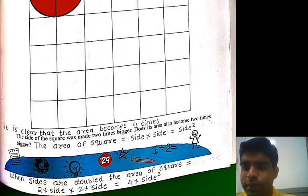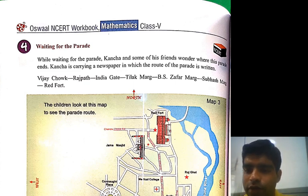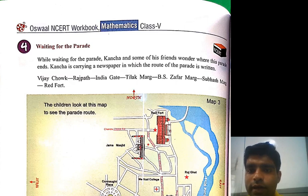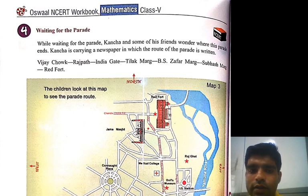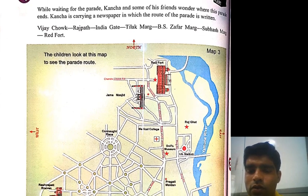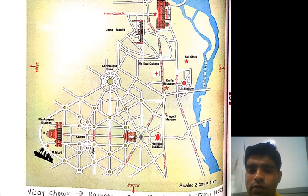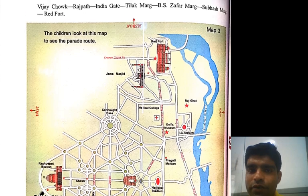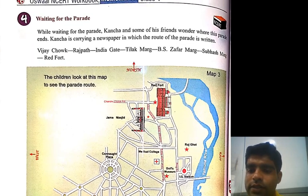Now starting from the next page — the story is 'Waiting for the Parade.' Kacha and some friends wonder where the parade is. Kacha is carrying a newspaper with the parade route written in it: Vijay Chowk, Rajpath, India Gate, Tilak Marg, Bahadur Shah Zafar Marg, Subhash Marg, and Red Fort. This map shows north, south, east, and west sides. I already discussed this map in the last previous video.